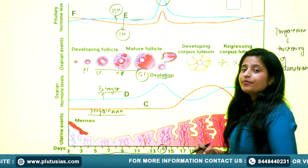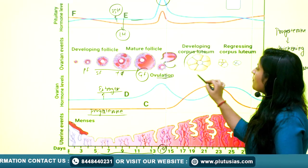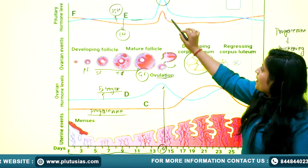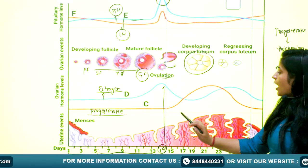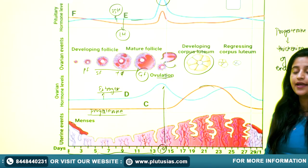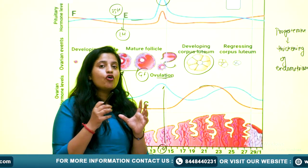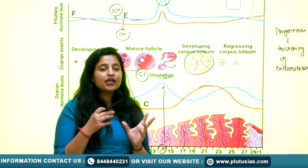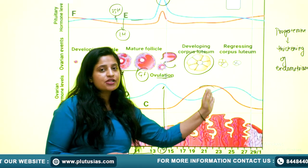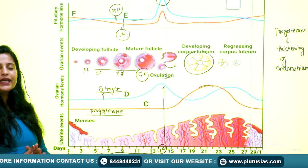At ovulation time, LH is at its peak — this is called the LH surge. The LH peak causes the Graafian follicle to rupture and the ovum comes out. The rest of the follicle becomes the corpus luteum. If fertilization takes place, progesterone remains high to maintain the endometrium for successful implantation of the early embryo. If there is no fertilization, progesterone levels drop and the menstruation phase begins again.